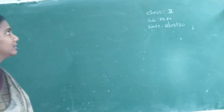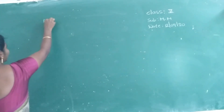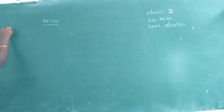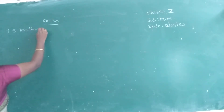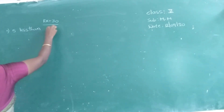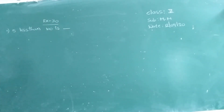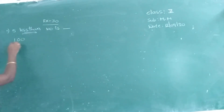For second class children I am starting exercise 30. First problem: 5 less than 100. Less than means you have to do subtraction. So, 100 minus 5.